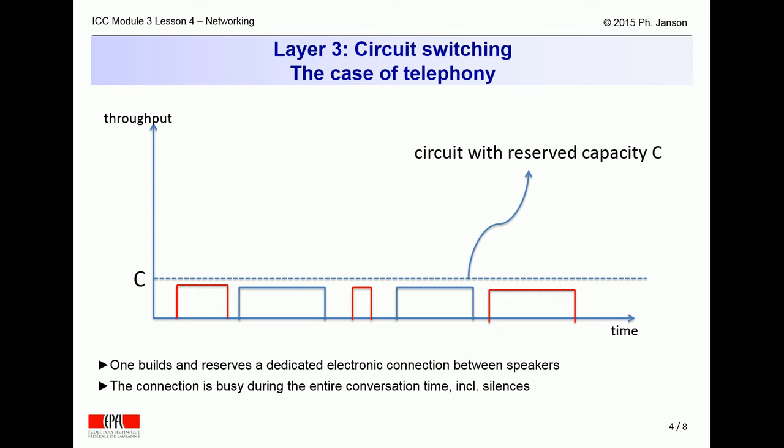In such a case, it makes sense to establish and to maintain a dedicated fixed bandwidth, fixed throughput connection between the communicating parties. That fixed bandwidth connection is efficiently utilized and remains busy for the entire duration of the call, even during brief silences when neither the red speaker nor the blue speaker are saying anything.